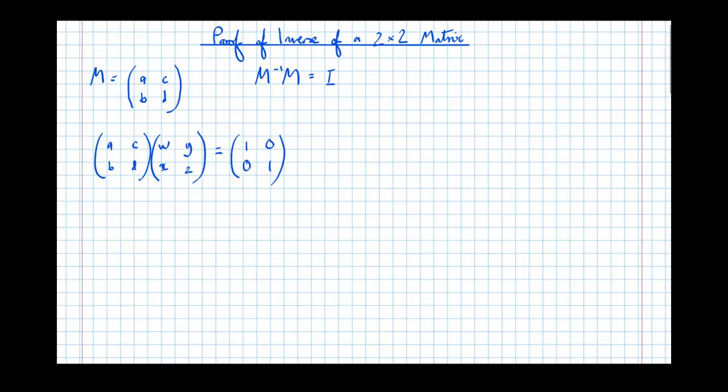We'll get AW plus CX equals 1. Let's call that equation A. Then we've got BW plus DX equals 0. Then we've got AY plus CZ equals 0. Let's call that equation C.